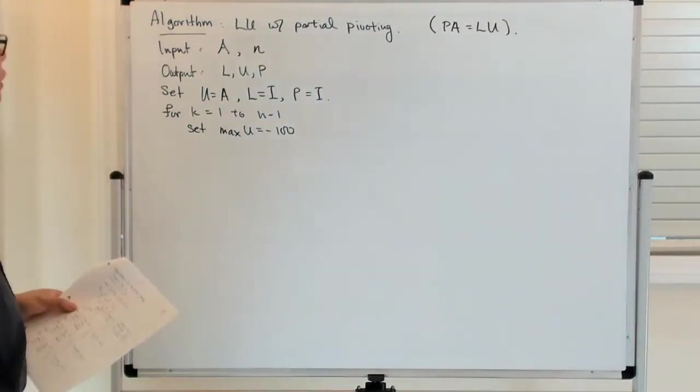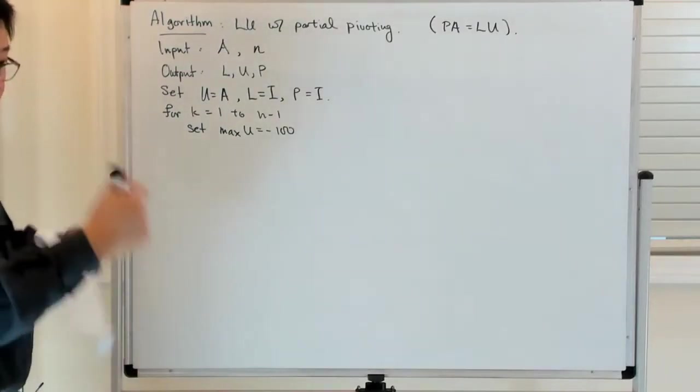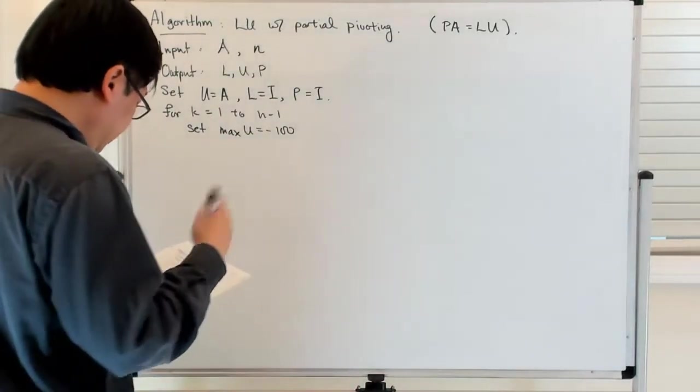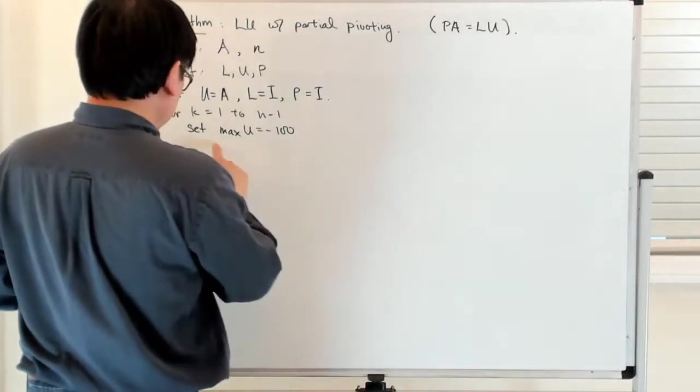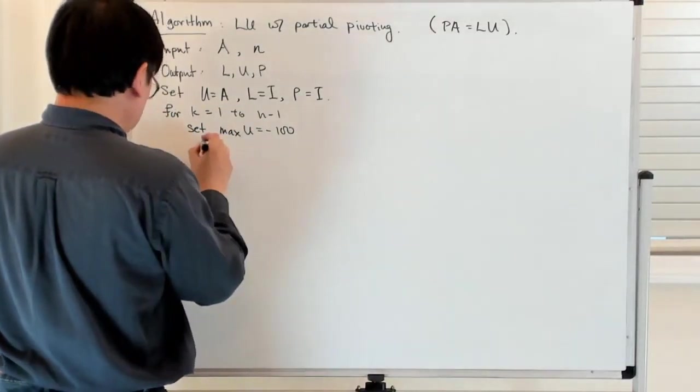If you recall, the first step is to figure out the pivot. Once you figure out the pivot, you do the swaps, and then you do the elimination step. So the first step again is just to see what is the pivot you want to pivot about.